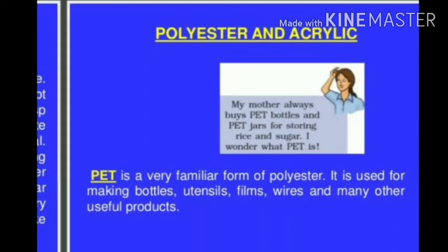Now polyester and acrylic. PET is a very familiar form of polyester — polyethylene terephthalate. It is used for making bottles, utensils, films, wires, and many other useful products. Polyester is a combination of 'poly' plus 'ester' with repeated units, and many useful products are made with PET.